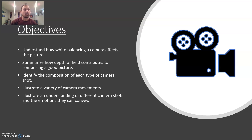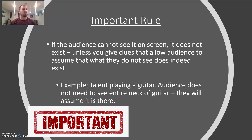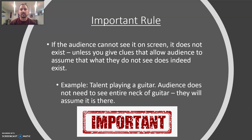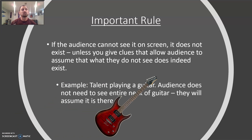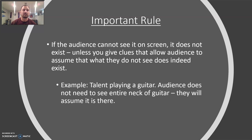One of the most important rules in filming is that if the audience can't see it, then it doesn't exist. You either have to present some sort of clue that it's actually going on — for example, someone might be playing a guitar. What we talk about in our classes is you have to give the audience clues that something is actually happening, because if they can't see it, it doesn't exist.